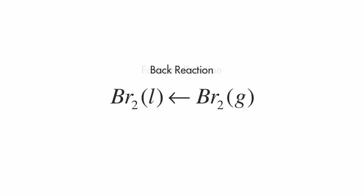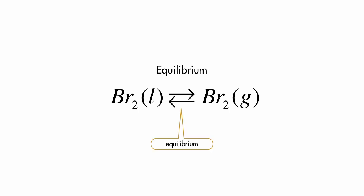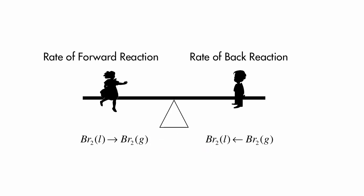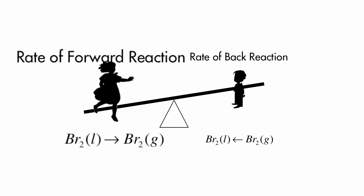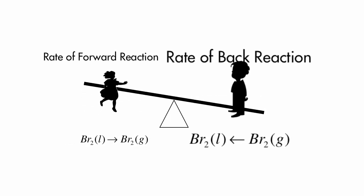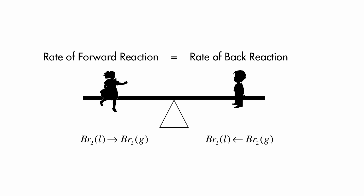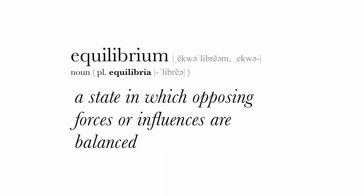A back reaction is just the opposite reaction going right to left. In this case, bromine condensing. An equilibrium is usually shown by using both the left and right arrows at the same time. In our seesaw analogy, when the rates of opposing forward and backward reactions are the same, the seesaw is in balance. And we say the reactions have reached equilibrium or the system is in equilibrium.